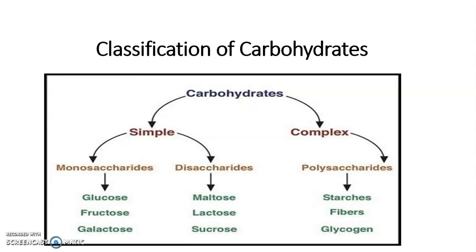From its name, monosaccharide means it is composed of only one molecule; disaccharide is composed of two molecules. In complex carbohydrates we can find polysaccharides — 'poly' means three molecules or more. Examples of monosaccharides: glucose, fructose, and galactose. Disaccharides: maltose, lactose, and sucrose. Polysaccharides: starch, fibers, and glycogen.